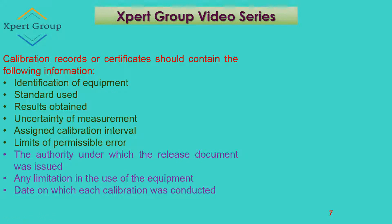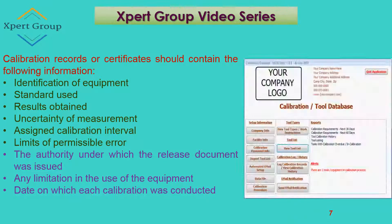When maintaining a calibration record certificate, the following information should be included. First, identification of equipment — what is that equipment and what is the identification of that tool type. Second, the standard used — what kind of standard is being applied for that particular equipment.